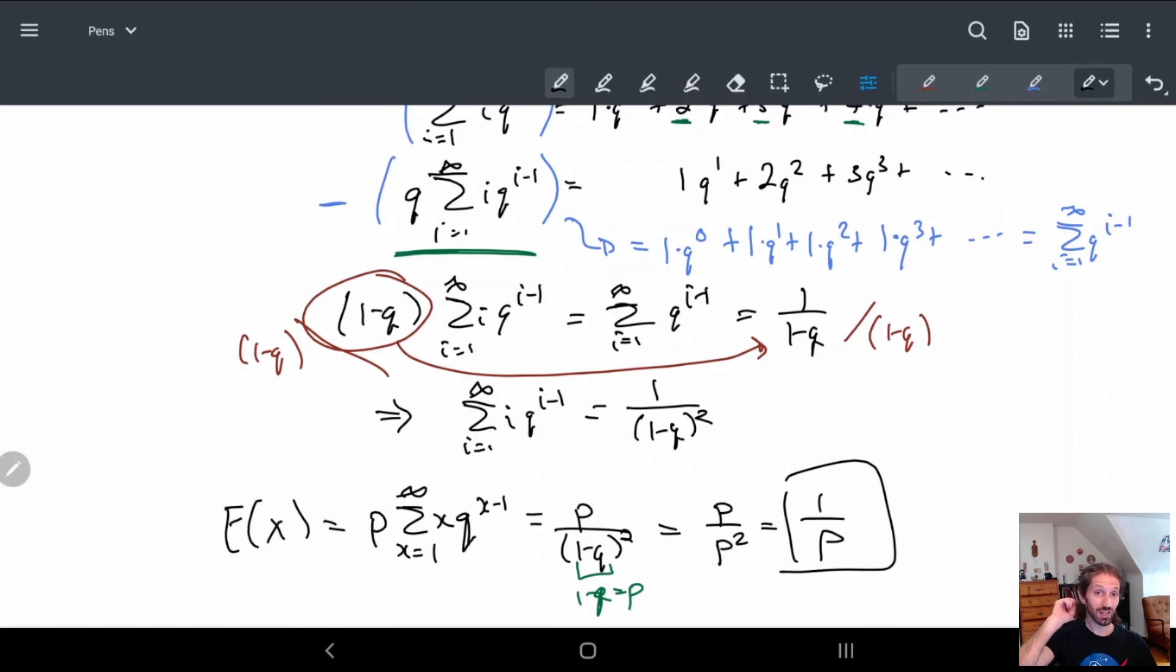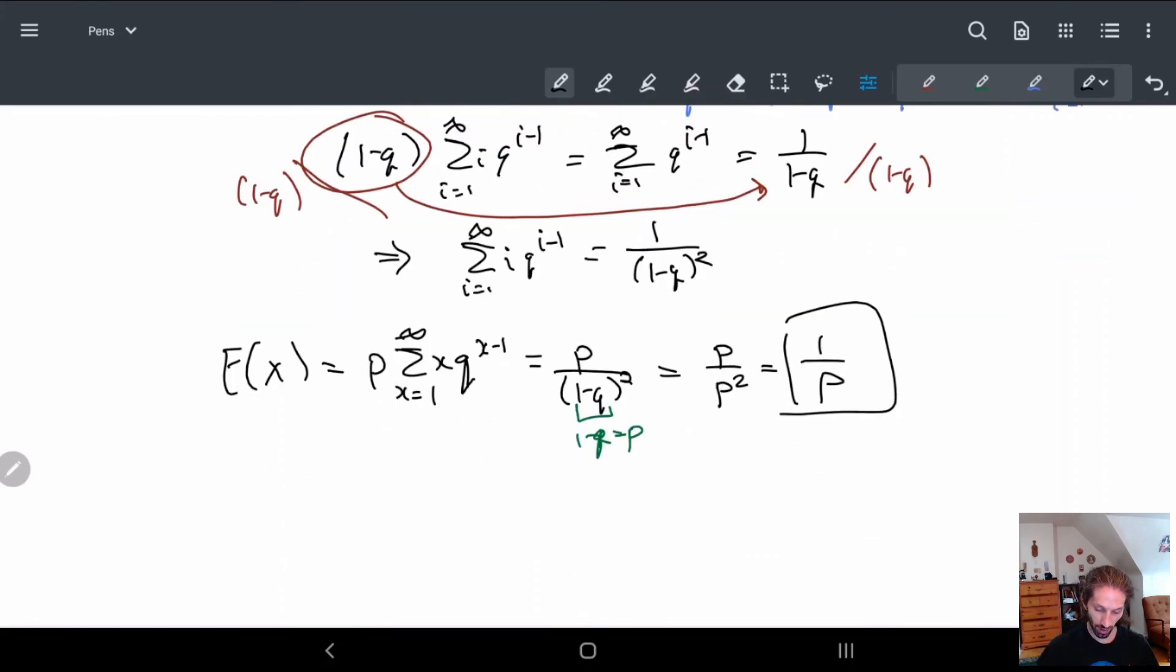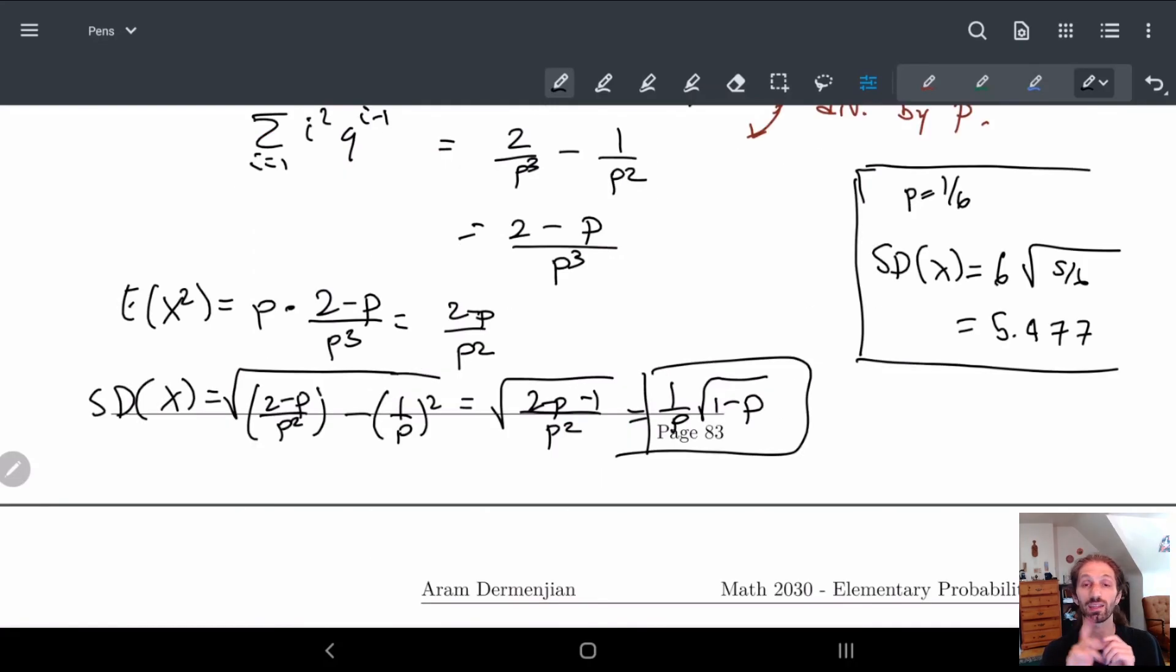So for example what do we get? Well I know I'm rolling a die, the probability for me is 1 sixth. And that means the expected value of X is equal to 1 over 1 over 6, so that's just 6. So after six rolls I should probably already have my first six, which makes sense. So in the next video we'll look at the standard deviation.